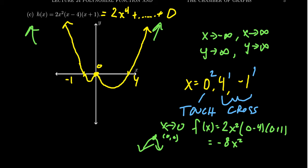This is what our function is going to look like. We see there are two turning points: one between negative 1 and 0, and another between 0 and 4. These are going to be local minima whose exact locations we don't know. Because 0 has an even multiplicity, we do know there's a local maximum at x equals 0. There are also going to be some inflection points somewhere between the local minima and 0, but where they are exactly, we don't really care about right now — we just want the basic picture.